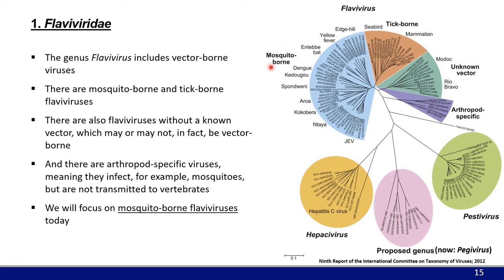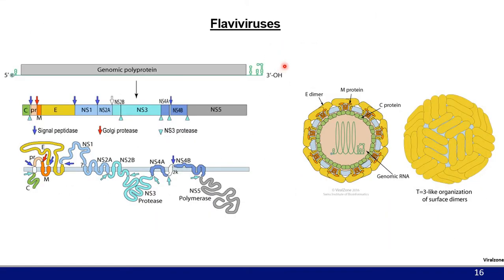Flaviviruses are single-stranded, positive-sense RNA viruses. Like mRNA, they have a 5' cap; however, they do not have a poly-A tail. The genome functions as an mRNA — when it enters the cell, it is translated directly into a polyprotein that is then cleaved into the various viral structural and non-structural proteins using both cellular and viral proteases. The 3' end of the genome has an interesting structured area containing various stem loops, called the subgenomic flaviviral RNA, or sfRNA, which has various functions in mammalian and insect cells.